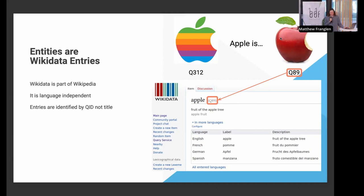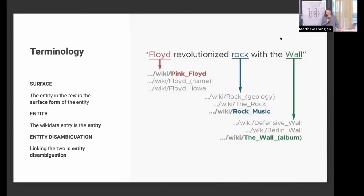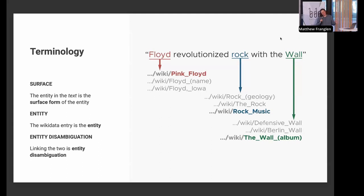I've been working on this for a while and I'm prone to slipping into undefined terms, so let me define them now. The 'surface form' is the word or phrase used in text — think of it as the wrapping around a box with different words on different sides, but the thing inside the box is the same. The 'entity' is the thing inside the box — the Wikidata QID-identified thing. And 'entity disambiguation' is the process of linking those two things together.